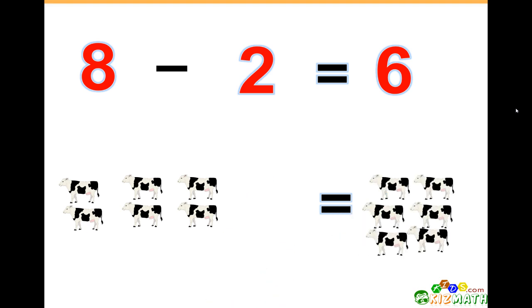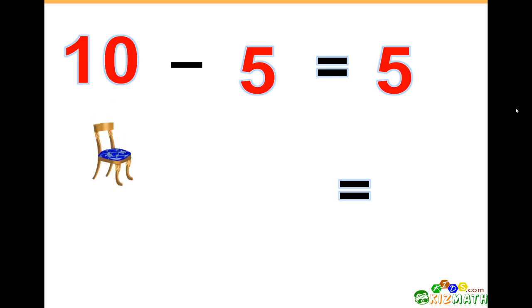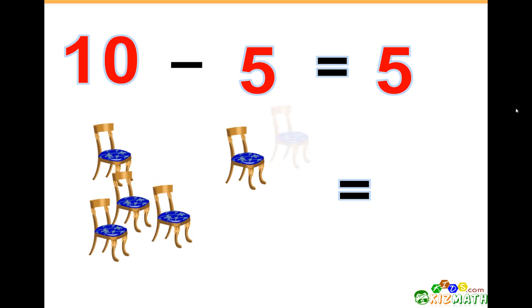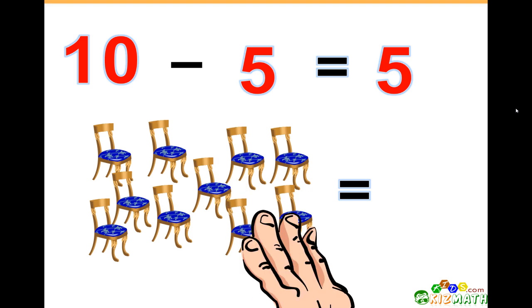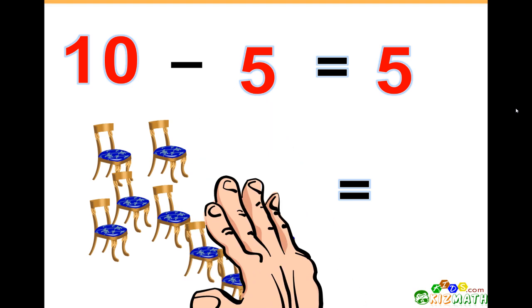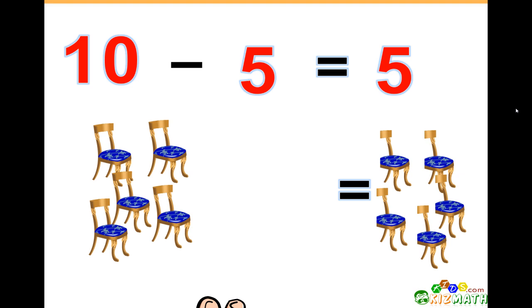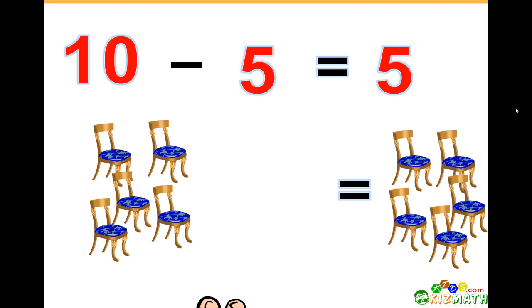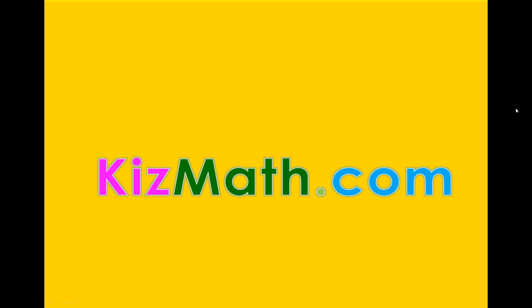there are only six cows left. 10 minus 5 equals 5. We have 10 chairs, and if we take away five of those chairs, we only have five chairs left. And that's the end of